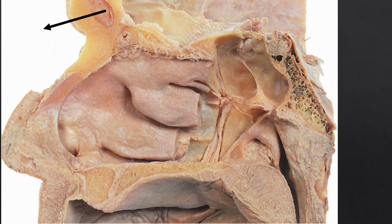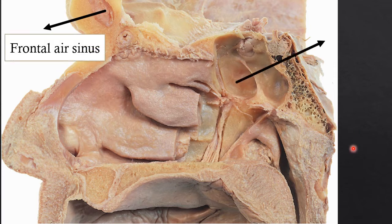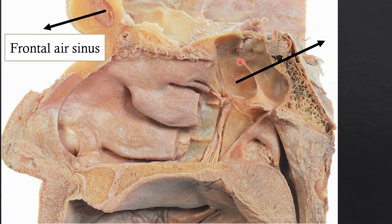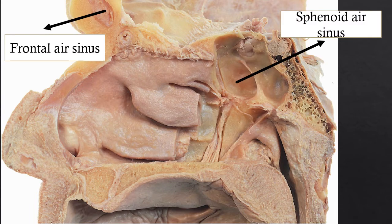Next we are going to see the four paranasal sinuses. Sometimes they put a probe in and ask you to identify a particular structure. The frontal air sinus — you have to study where it opens. The sphenoidal air sinus — just above the nasal cavity in the frontal bone the space present is called the frontal air sinus. Posterior and superiorly we can identify the sphenoidal air sinus.